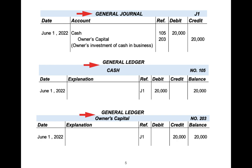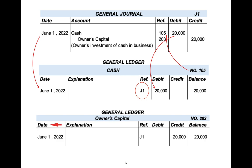Let's see how we did the posting, starting with the cash account. Here we enter the date shown in the journal, here we enter the journal page, here we enter the debit amount, and here we add the account number and write it in the reference column of the journal. We do exactly the same with the owners capital account: we enter the date, the journal page, the credit amount, and then we enter the account number in the journal reference column.